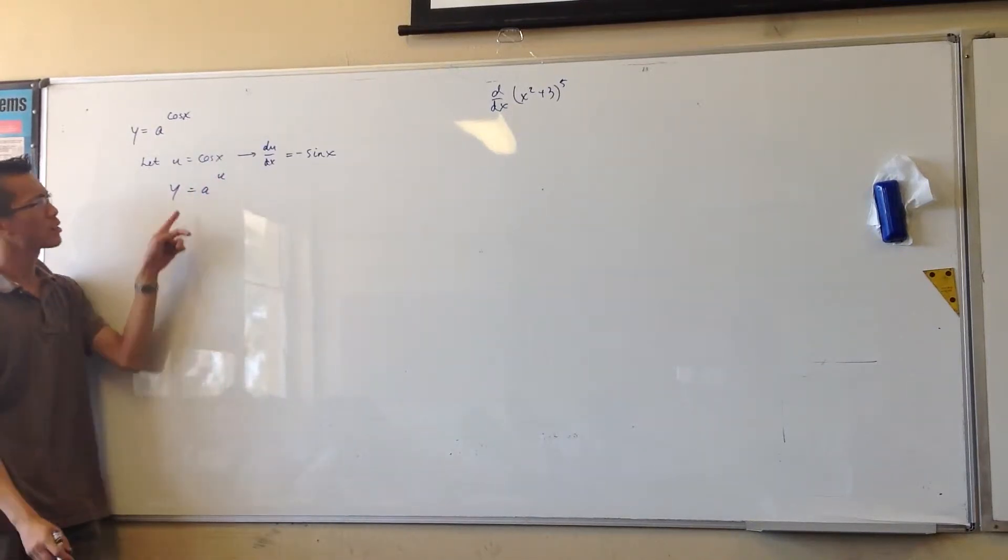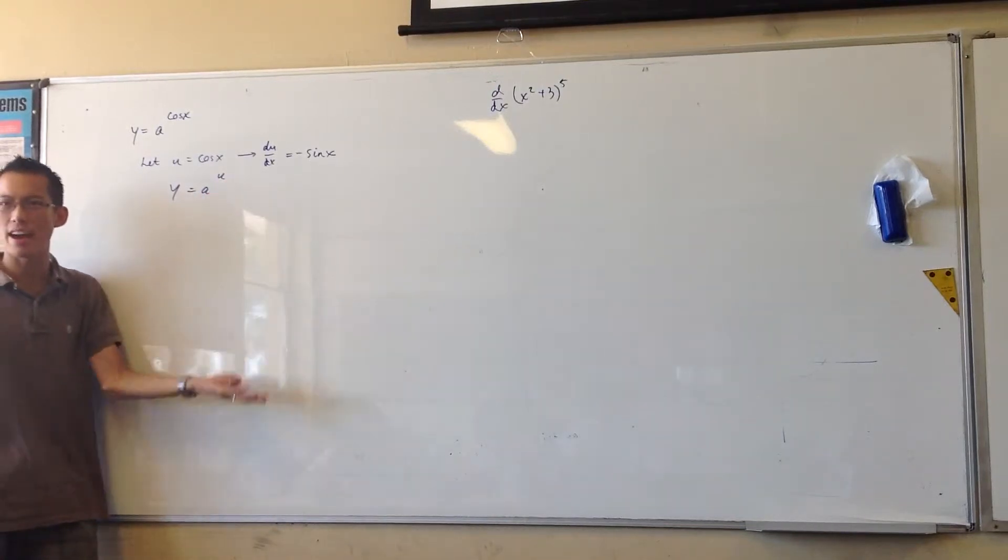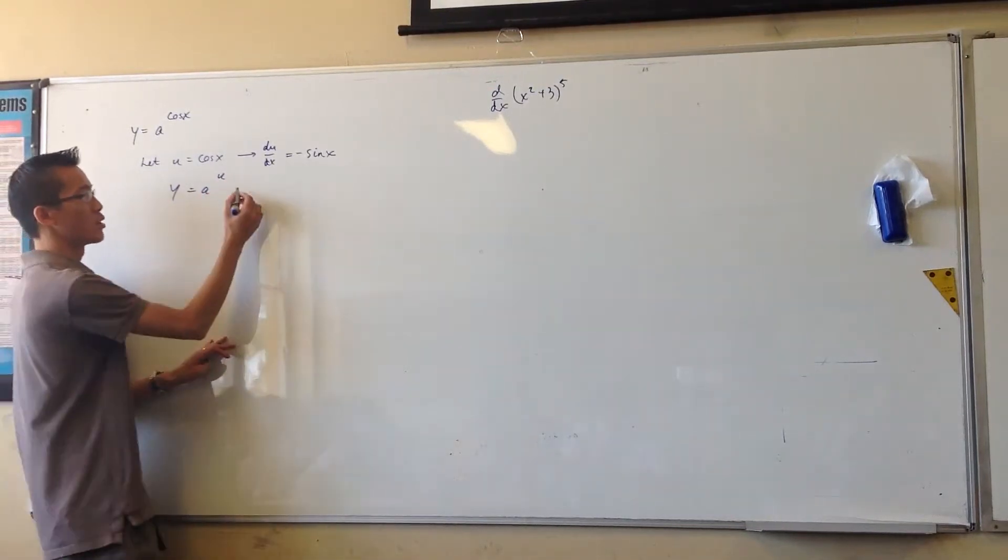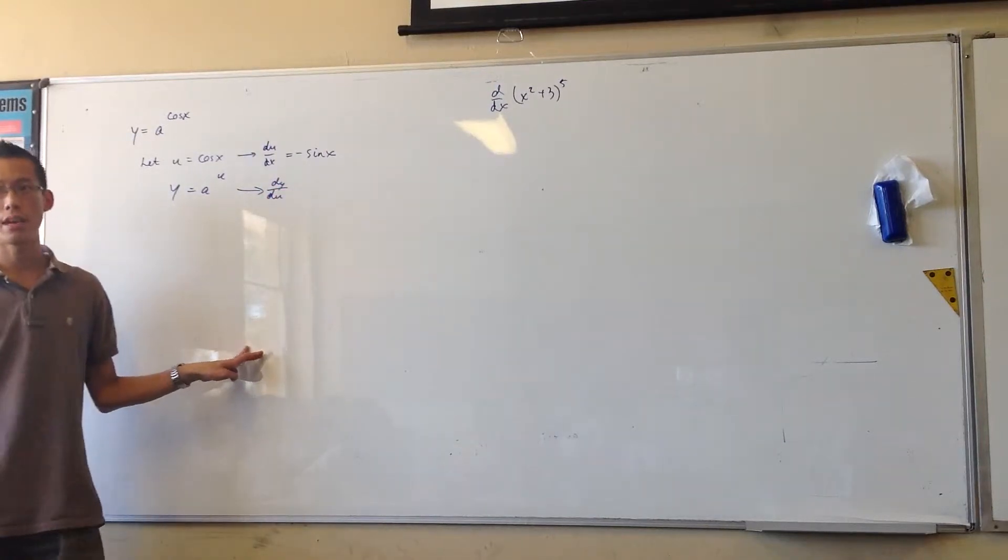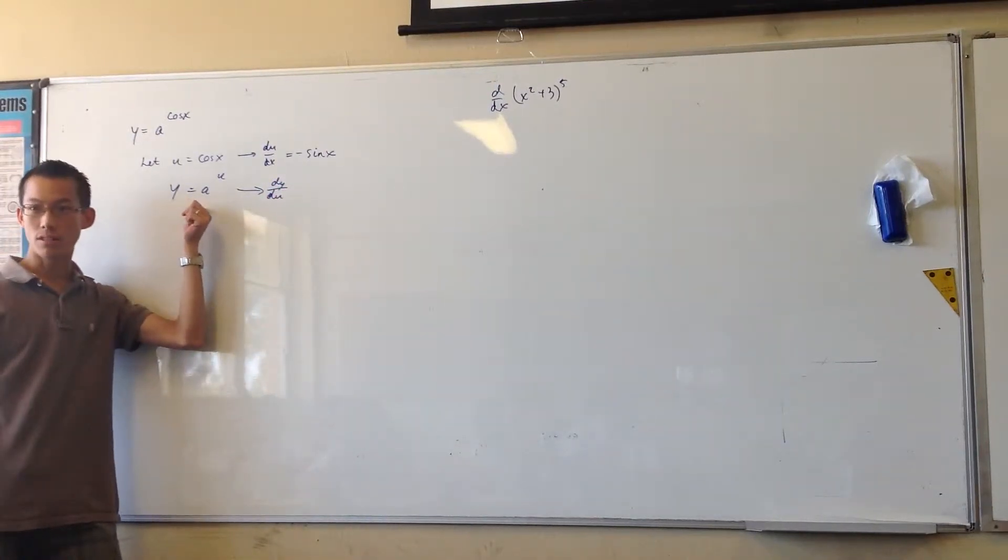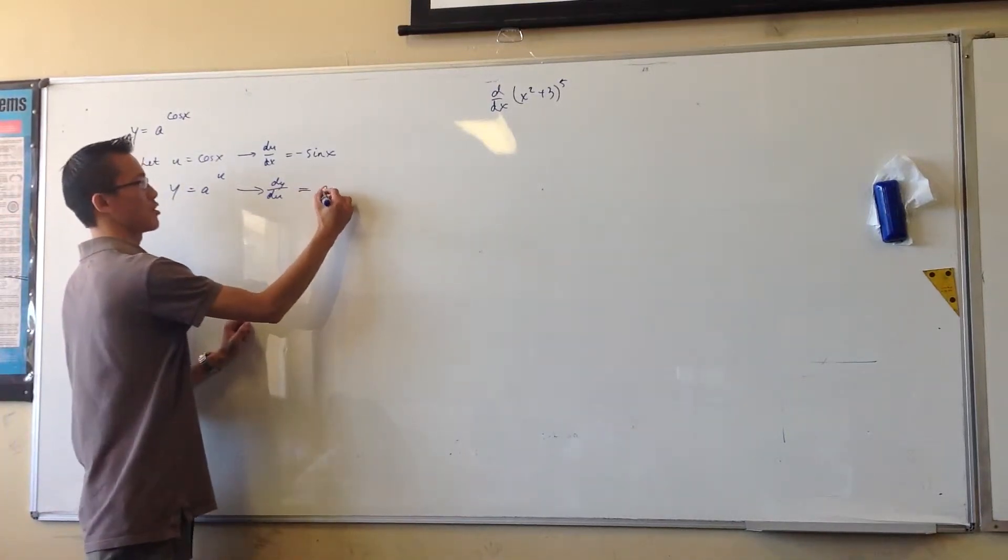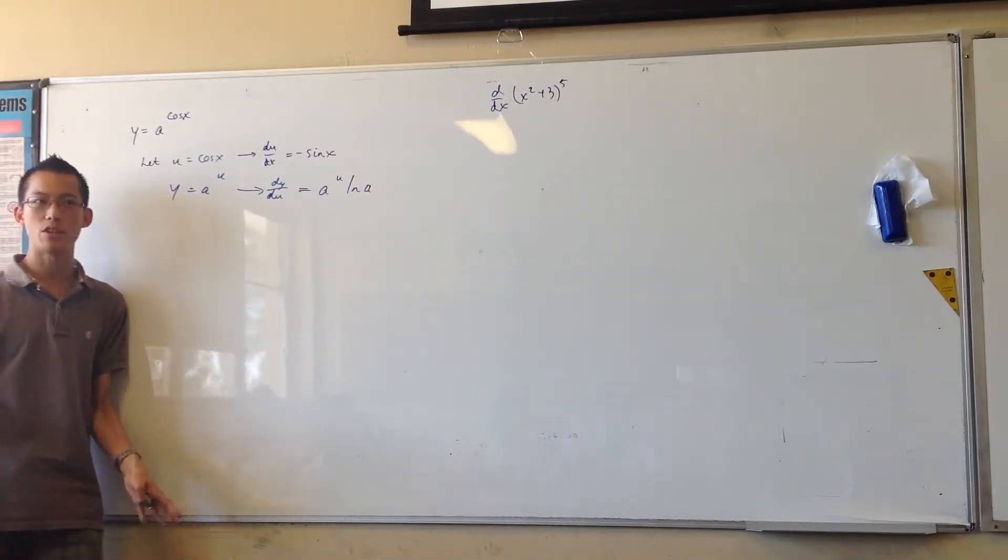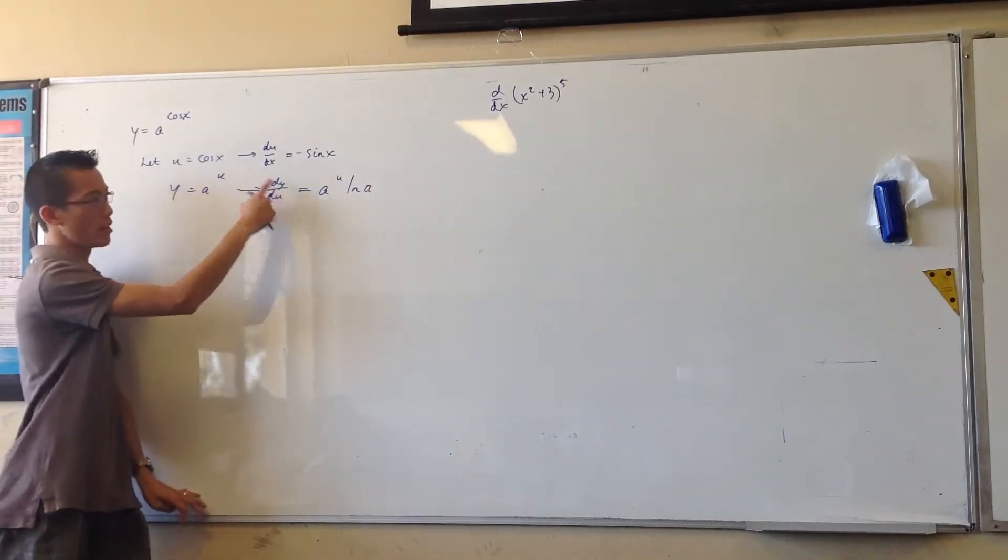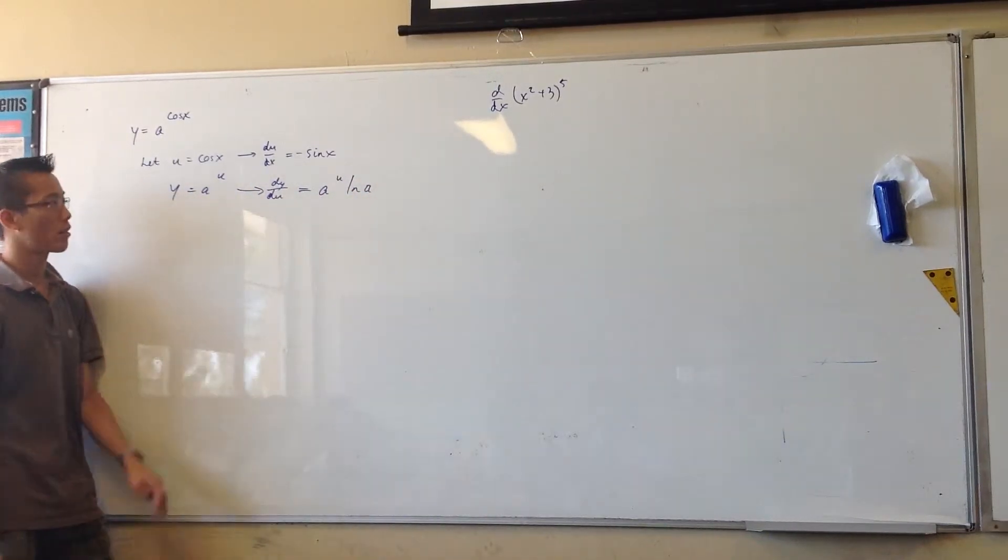So that looks weird, but if it was any other letter, like if it was x, a to the x, you guys know how to differentiate a to the x, right? So if I differentiate a to the u with respect to u, this is just any odd constant. Unfortunately, it's not e, so it makes it a little bit trickier, but not that much. It's just a to the u log a, right? Do you remember that? Which is why in the special case where it's e to the u, this part here becomes log e, which is why it just becomes 1.